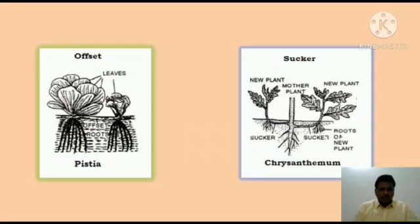Offset. It is a short runner with one long internode. It originates from the axil of a leaf. It grows as a short horizontal branch and produces a rosette of leaves above and adventitious roots below. The offset often breaks away from the mother plant. Example: Pistia.